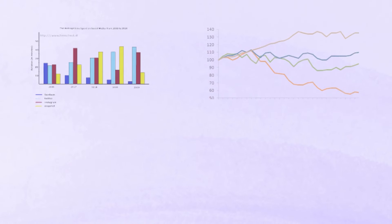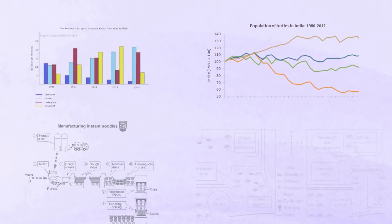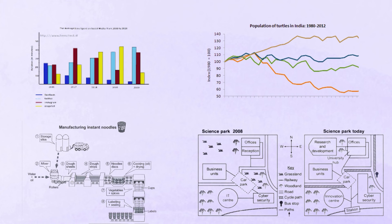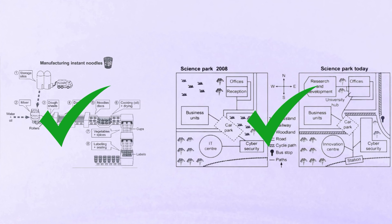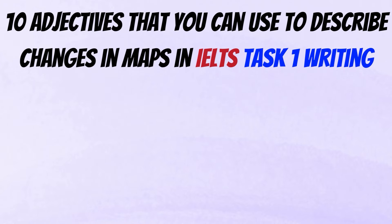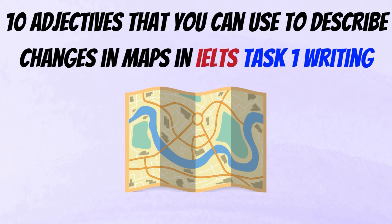When it comes to IELTS task 1 writing, a mistake that many people make is that they focus too much on bar charts and line graphs and they completely forget about other forms of task 1 such as diagrams and maps. And on the day of the exam, guess what type of task 1 they get? Yeah, a diagram or map. You should be practicing equally on all types. And because of that, in today's video, I decided to show you 10 adjectives that you can use to describe changes in maps in IELTS task 1 writing.